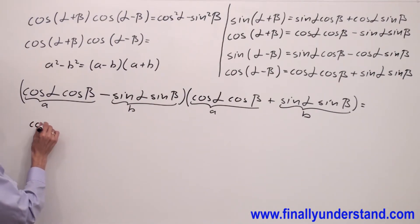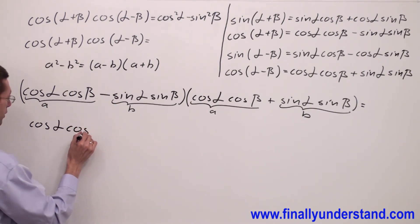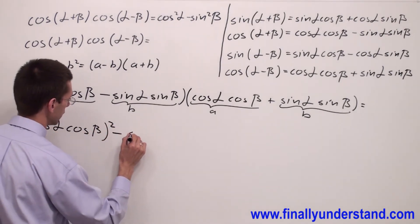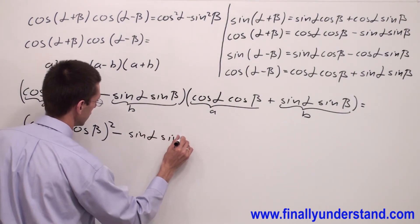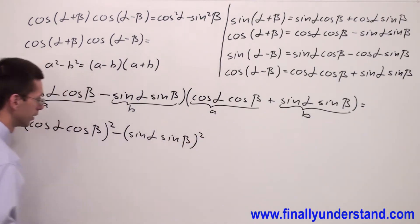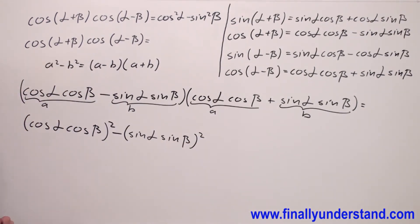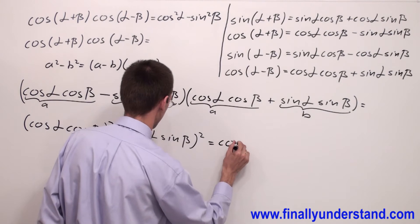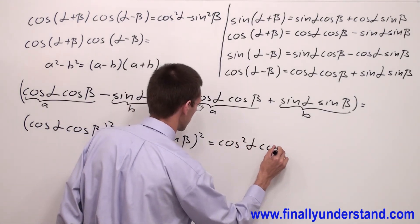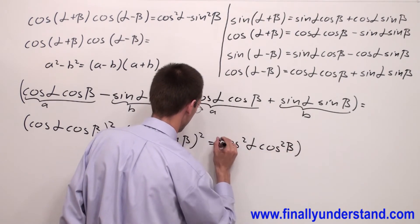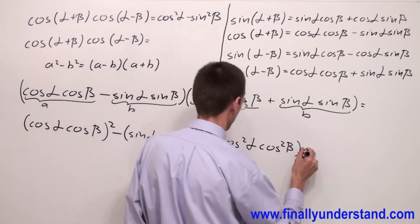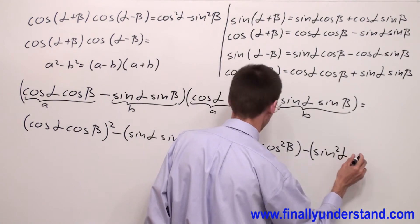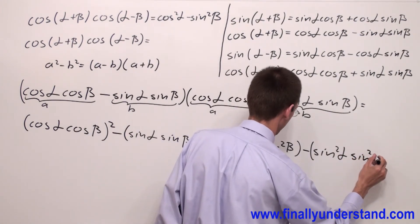That's why I'm going to rewrite this problem as (cosine alpha cosine beta) squared minus (sine alpha sine beta) squared. Next, I'm supposed to use the properties of exponents and simply rewrite this as cosine squared alpha cosine squared beta minus sine squared alpha times sine squared beta.